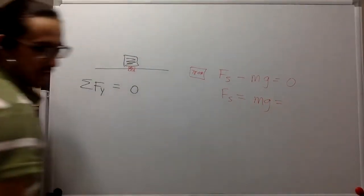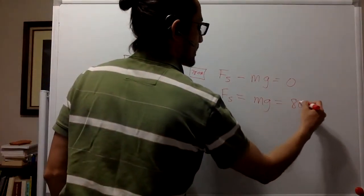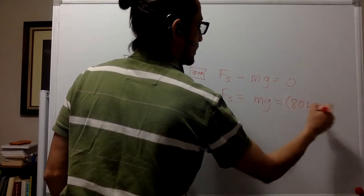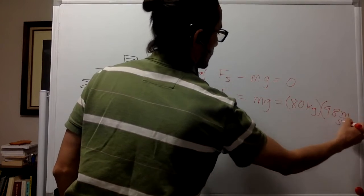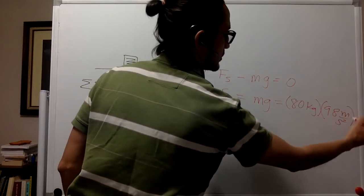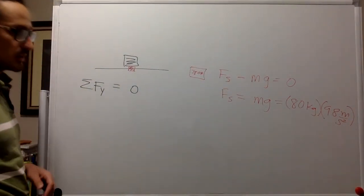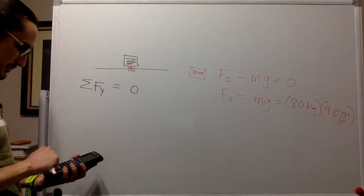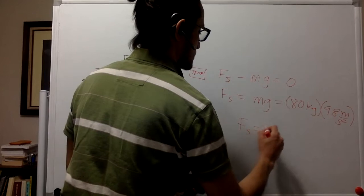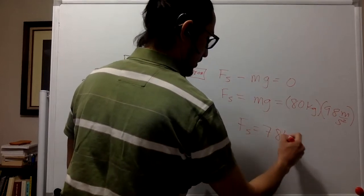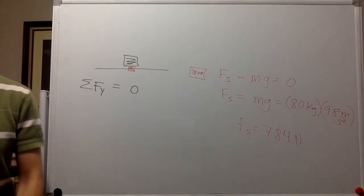So the mass is 80 kilograms. And the acceleration, if this astronaut alien astronaut is on earth, it's going to be 9.8 meters per second squared. That is equal to 784 newtons, which is just the weight of the astronaut.